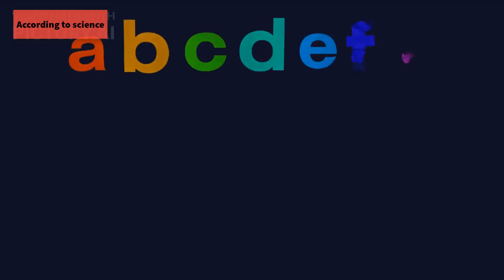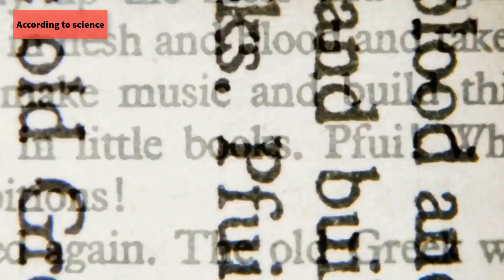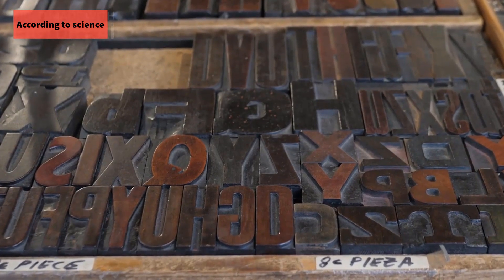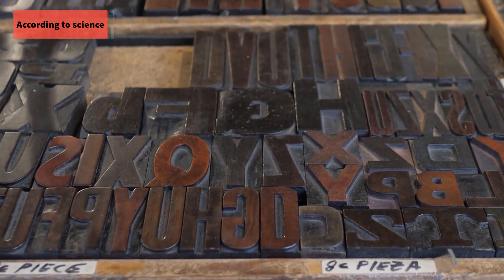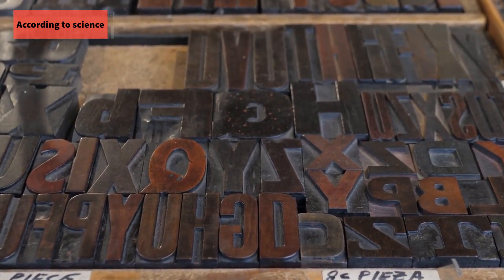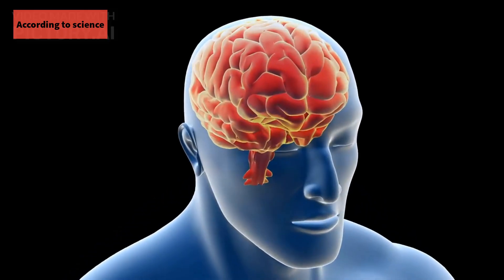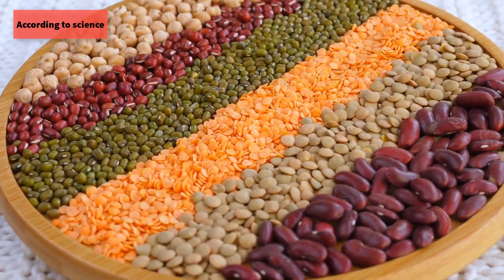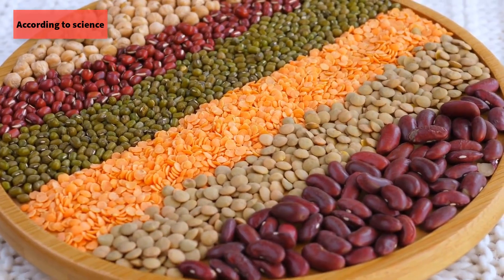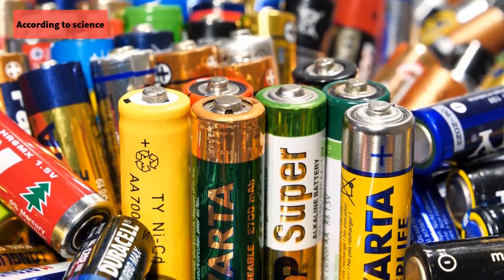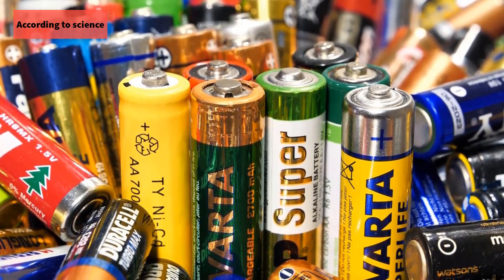Consider amino acids to be letters of the alphabet. Different words are formed by combining letters in various ways. The same is true for amino acids. Different proteins are formed when they are combined in various ways. To function properly, your body requires 20 different types of amino acids. These 20 amino acids combine in various ways in your body to form proteins.